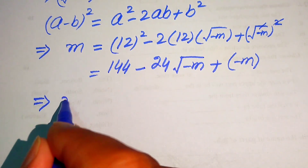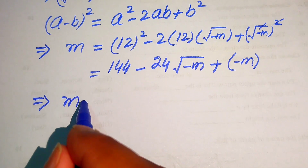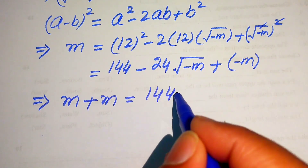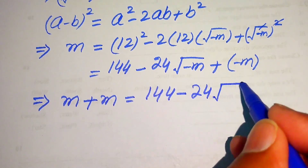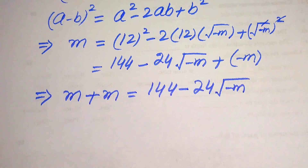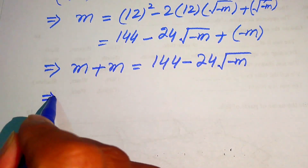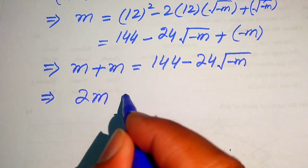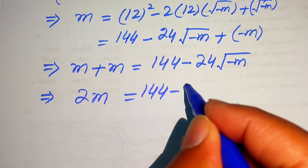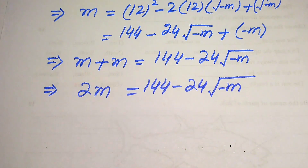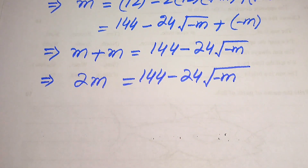Now we move this minus m to the left hand side — it becomes plus m — so we get m plus m equals to 144 minus 24 times square root of minus m. Adding those two m values gives us 2m equals to 144 minus 24 times square root of minus m.